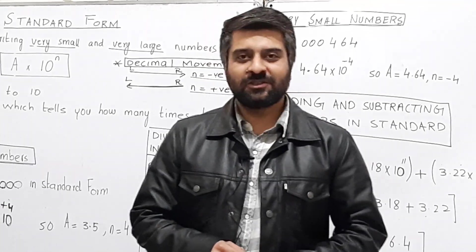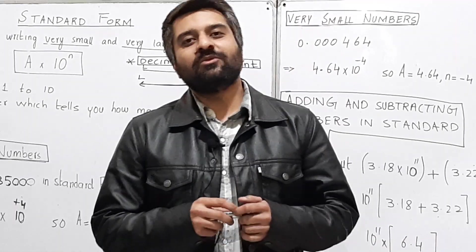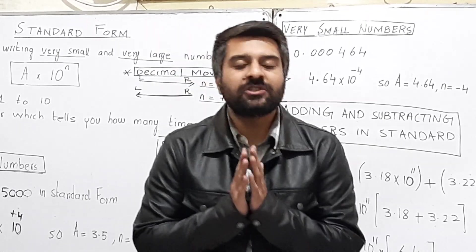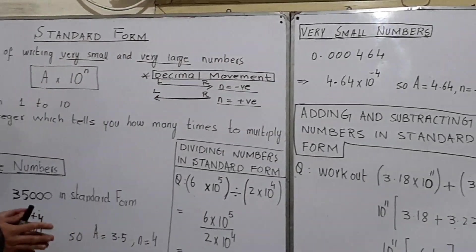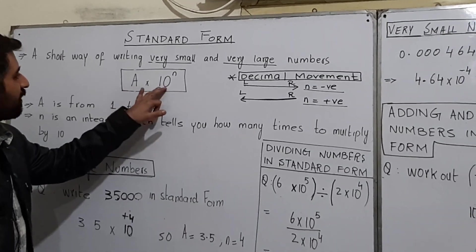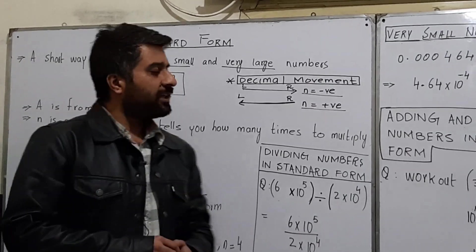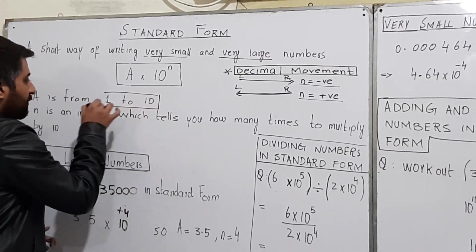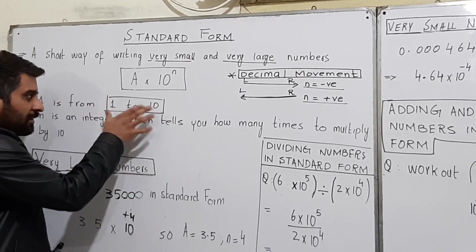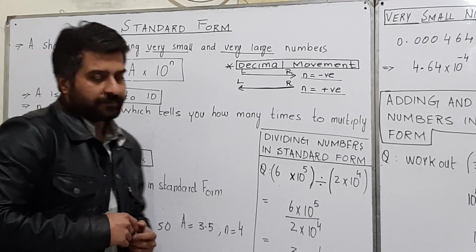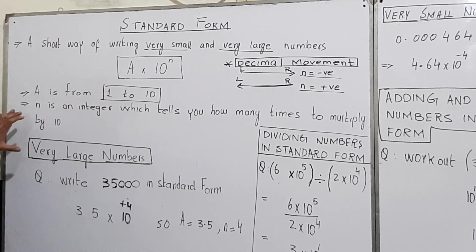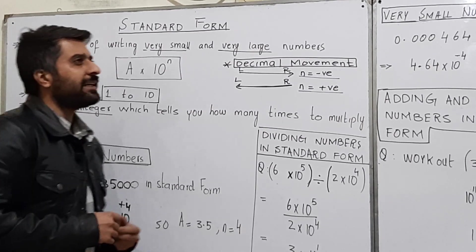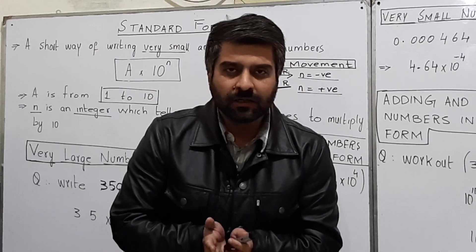We are going to study standard form today. Standard form is basically used when you have to express very large numbers or very small numbers in an easier way. The standard form is: a × 10 raised to the power n. Now, a is a number that ranges from 1 to 10, and n is the power of 10. n is an integer and it basically tells you how many times 10 will be multiplied in a number.